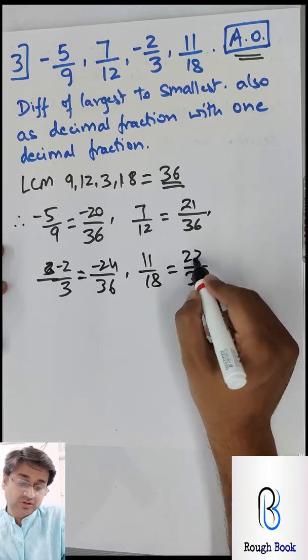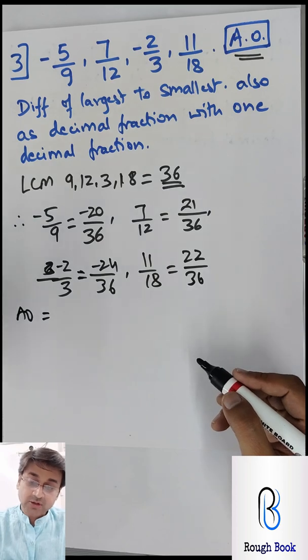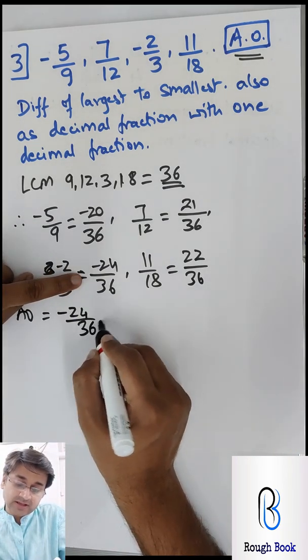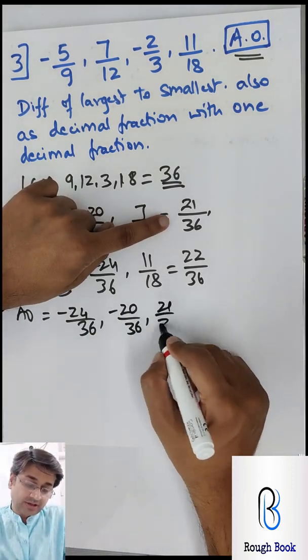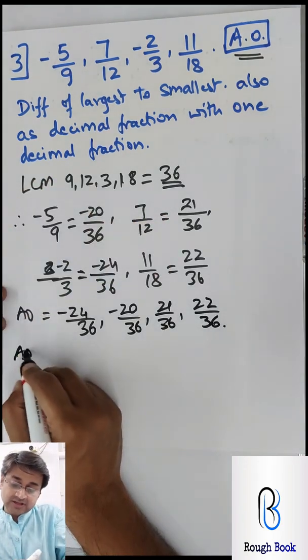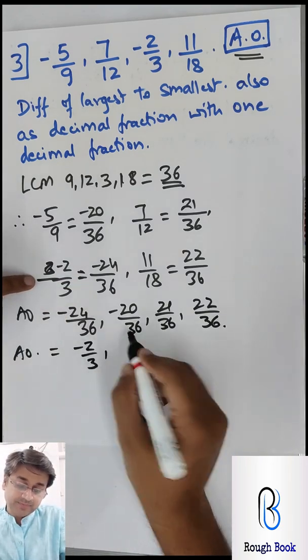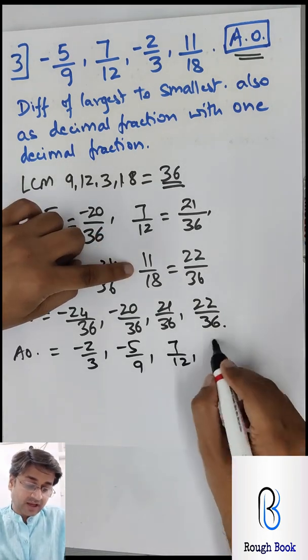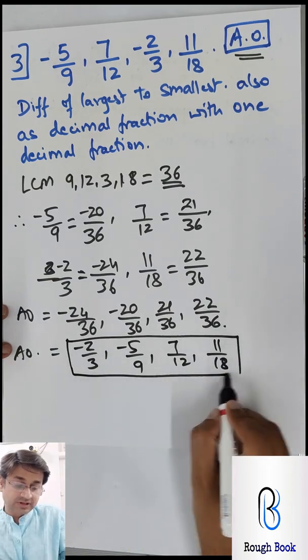And then the next one, minus 2 by 3, so 36 - so 3 twelves are, so 24 over here. And 11 by 18, so again 36 is 2 times, so 22. So therefore ascending order will be the smallest to the biggest. So this is the smallest: negative 24 by 36, then negative 20 by 36, then 21 by 36, and 22 by 36. So actual ascending order is going to be negative 24 is negative 2 by 3, 20 will be negative 5 by 9, and then 7 by 12, and finally 11 by 18. So that's our final answer for the ascending order.